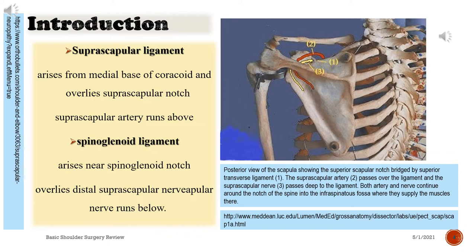Posterior view of the scapula showing the superior scapular notch bridged by the superior transverse ligament. The suprascapular artery passes over the ligament, while the suprascapular nerve passes deep to the ligament. Both artery and nerve continue around the notch of the spine into the infraspinatus fossa, where they supply the muscles there.